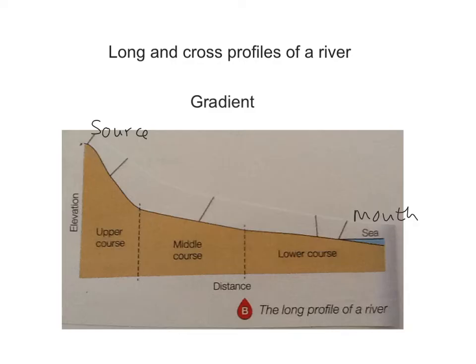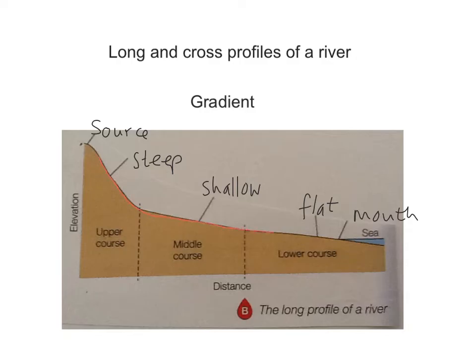The gradient changes. In the upper course of the river we can describe the gradient as steep. In the middle course the gradient will be shallow, and in the lower course it will be more or less flat. You can see that the gradient shape is a very concave shape, so the long profile is concave.